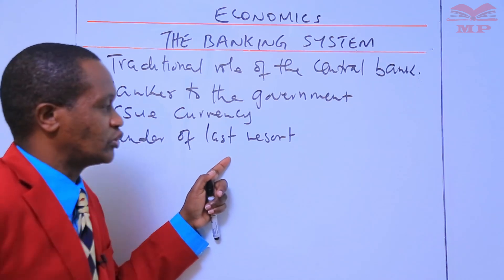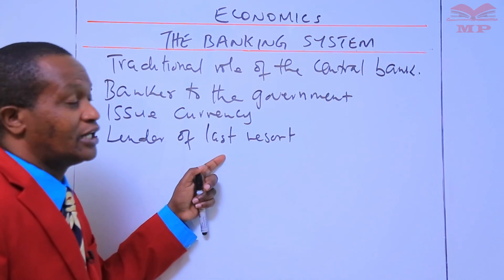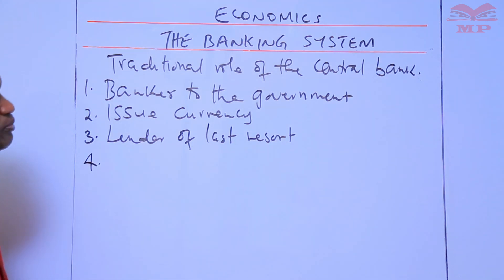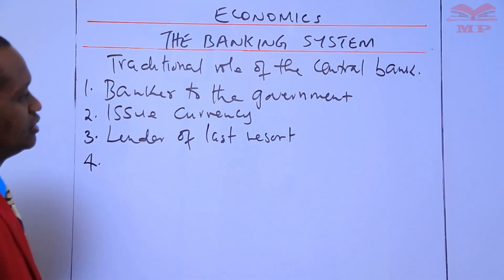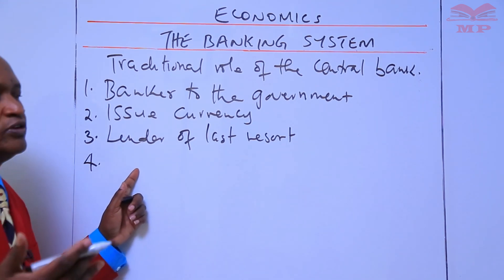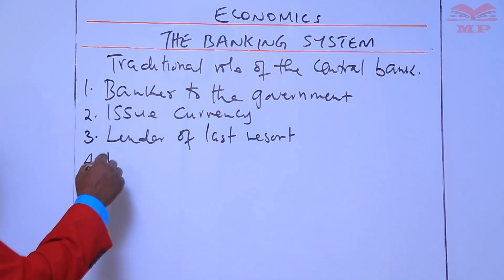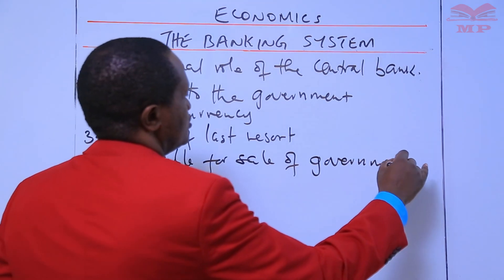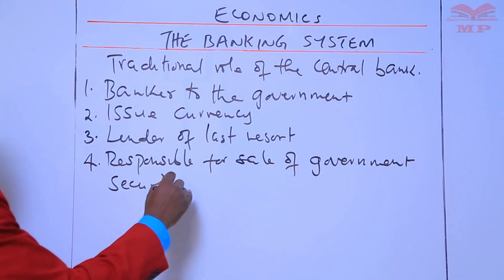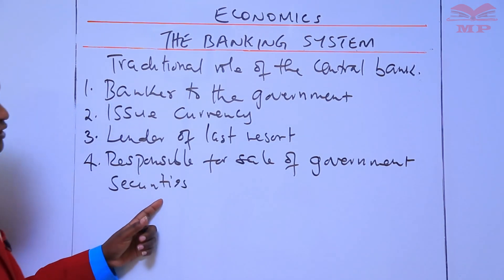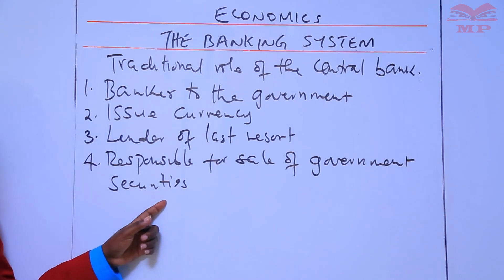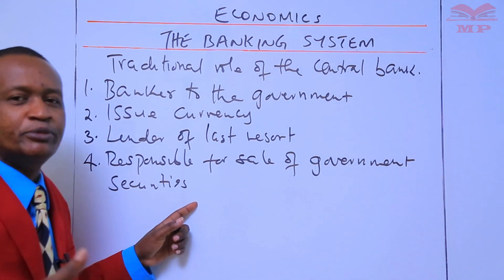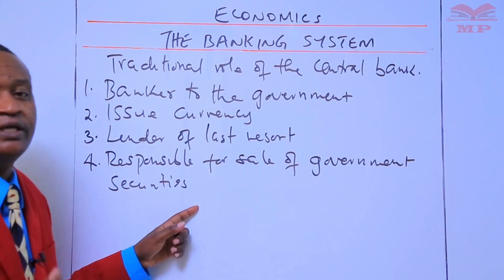The money lent by the central bank comes at a higher cost. Number four: the central bank is responsible for the sale of government securities. The central bank has a responsibility for the sale of government securities such as treasury bills, payment of interest on them, and the redemption of government securities.